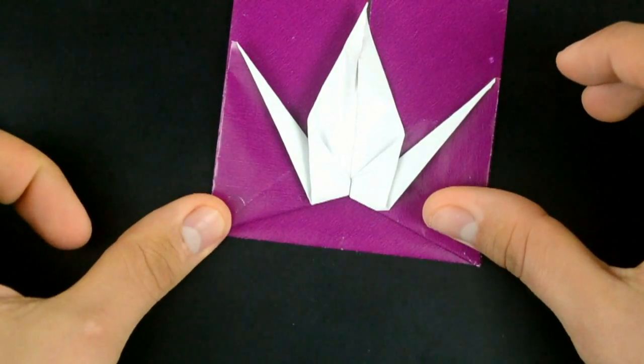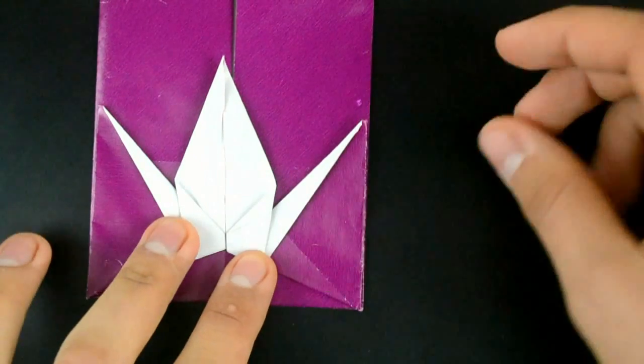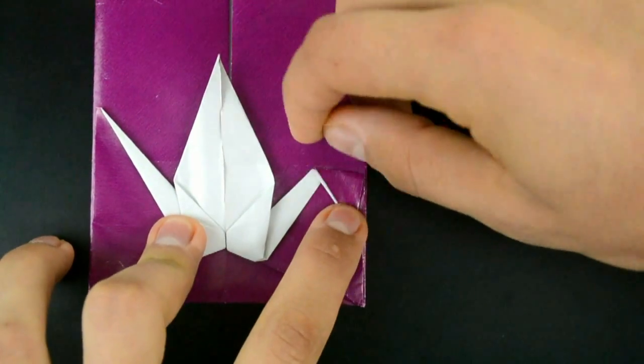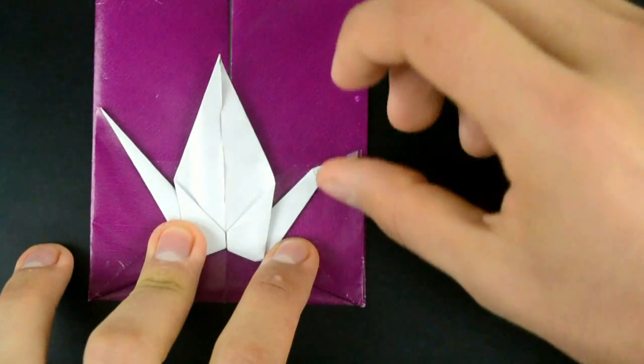Now to make the detail of the head and beak, just fold down this corner just a little, and with the same logic as before, reverse this part.